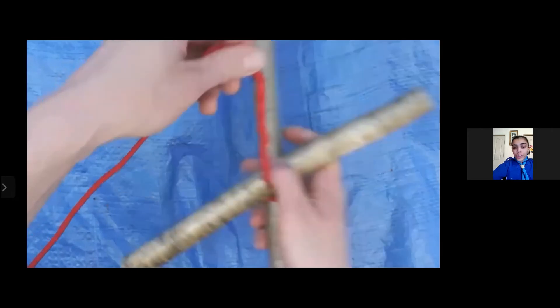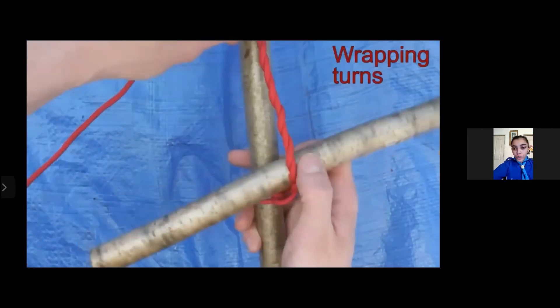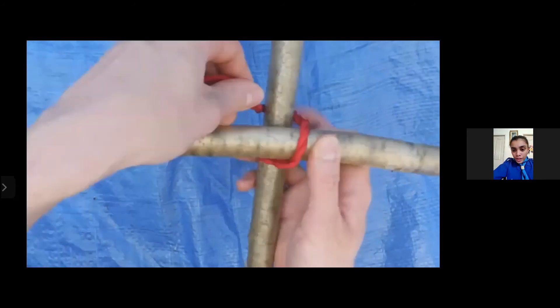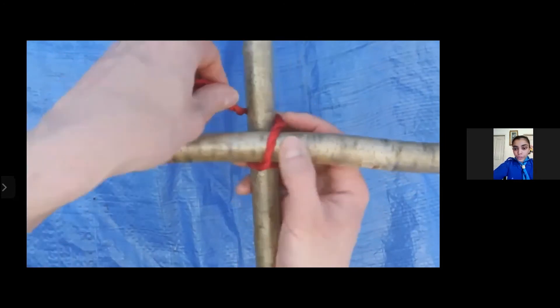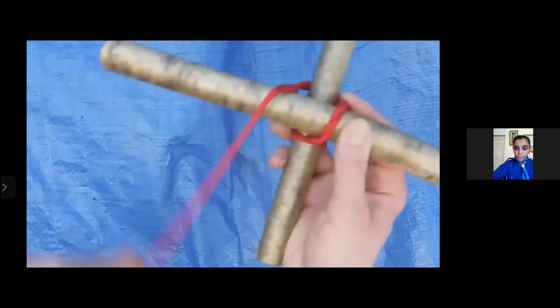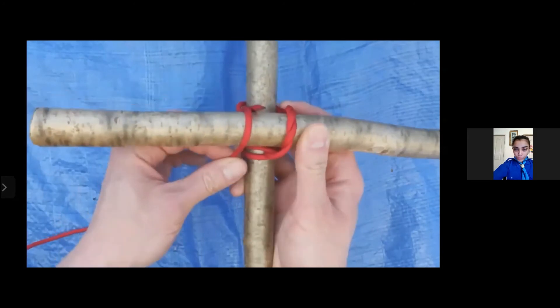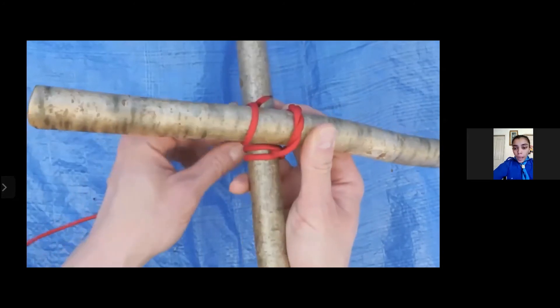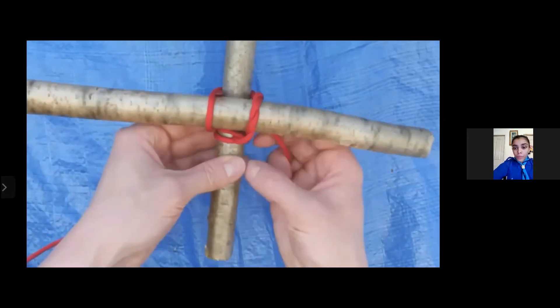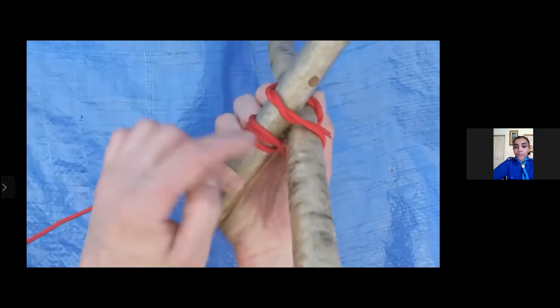Now you will take this rope and you will put it across and wrap it as you can see it is shown in the video. So you take the rope back and then you pull it from the top and then you bring it in the front again.